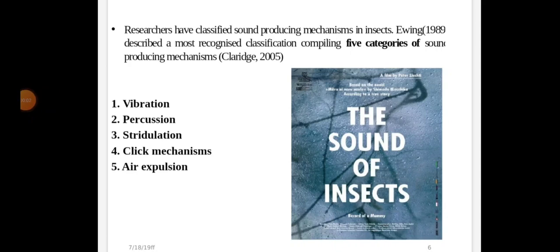Hello students, today we will discuss the sound producing organs in insects. Insects of some species are capable of producing and perceiving sound with the help of variable but well-defined mechanisms and organs. Their sound has a certain biological significance and may be used as a species-specific language among the opposite sex and individuals during mating, aggression, danger, etc. Researchers have classified sound producing mechanisms in insects into 5 categories: vibration, percussion, stridulation, click mechanism, and air expulsion.